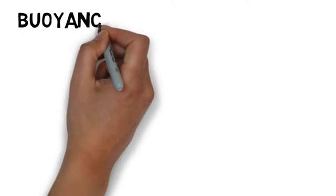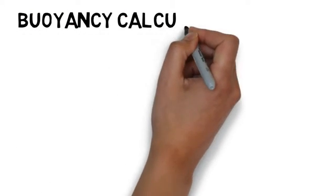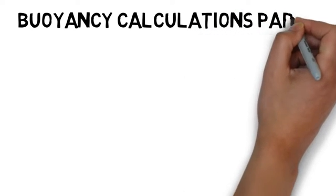We're on buoyancy calculations part two, finding an object's weight or volume. This is example question five from the study notes.